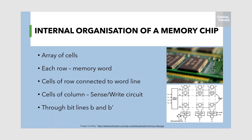Memory cells are usually organized in the form of an array in which each cell is capable of storing one bit of information. A possible organization is illustrated in the figure. Each row of the cells constitutes a memory word and all the cells in a row are connected to a common line referred to as the word line, which is driven by the address decoder on the chip.